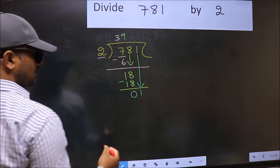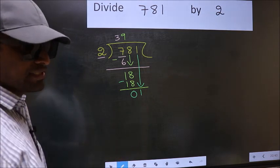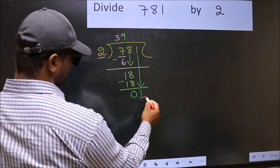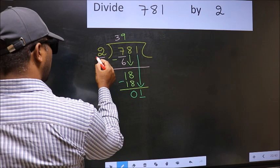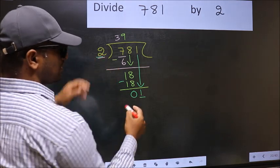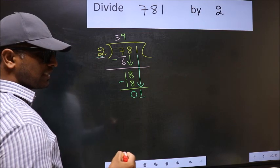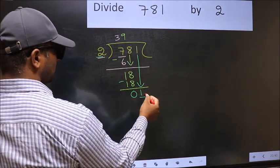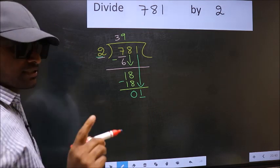After this step, the mistake happens. And the mistake is this. Here we have 1 and here 2. 1 is smaller than 2. So what many do is, they directly put a dot and take 0. Which is wrong.